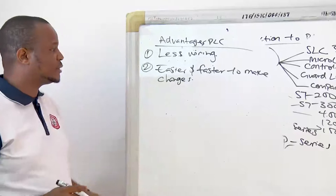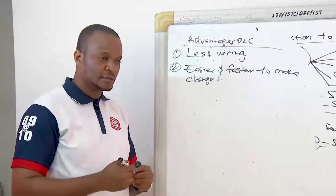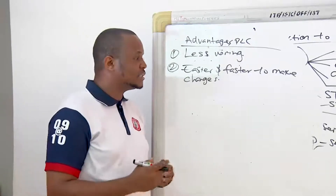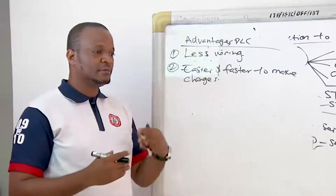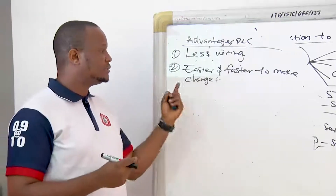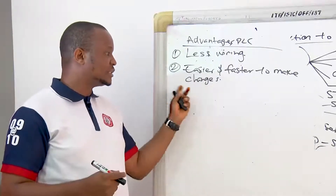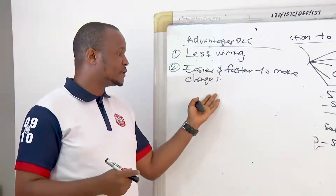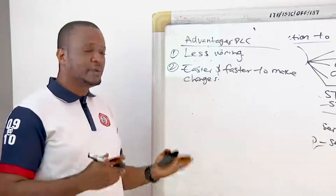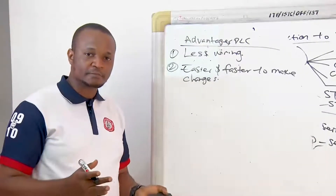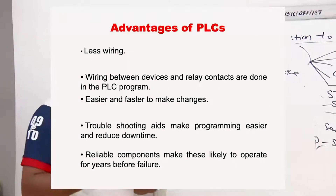By being easier and faster to make changes, we mean that should you have a fault in the line, you can make changes by altering the program. Instead of going ahead to trace wires and make a lot of changes as with relay logic, you can effect changes by pulling out a module and replacing it, which is faster, or by making changes in the program should you have any challenge.